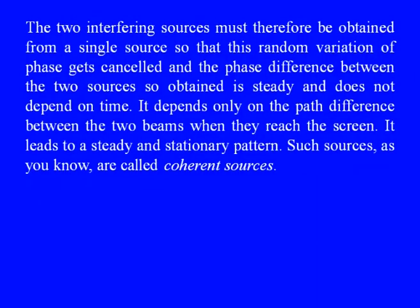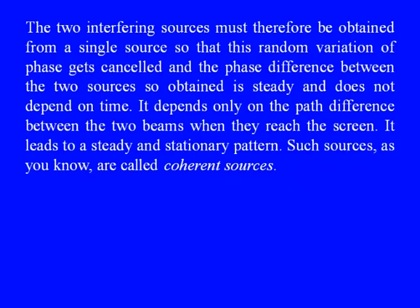Two interfering sources must therefore be obtained from a single source so that this random variation of phase gets cancelled. The phase difference between the two sources so obtained is steady and does not depend on time. It depends only on the path difference between the two beams when they reach the screen where the pattern is observed. It leads to a steady and stationary pattern. Such sources are called coherent sources.